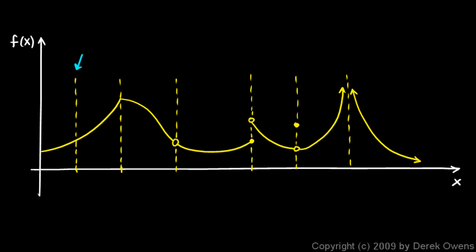At this first point, the function has a derivative. The graph is continuous — there's no gap through this region — and it's smooth; there's no cusp. So it is therefore differentiable at that point. It's continuous and smooth, and so it has a derivative at that point.